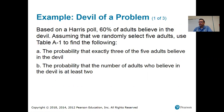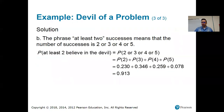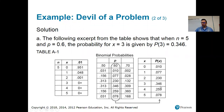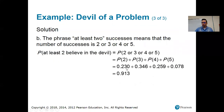If it said more than two, I wouldn't include two — just three or four or five. Looking at the same table, we're looking for the probability that the number is at least two. The probability it's exactly two is 0.230, exactly three is 0.346, exactly four is 0.259, and exactly five is 0.078. Adding those four numbers together gives 0.913. This is a little faster than using the formula.